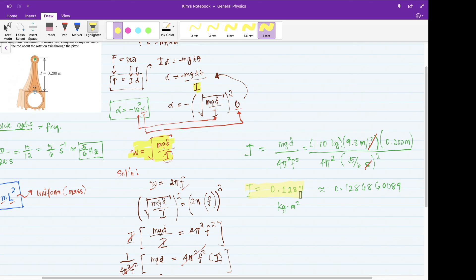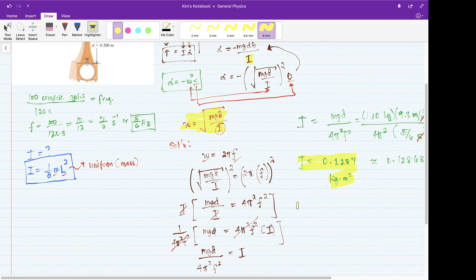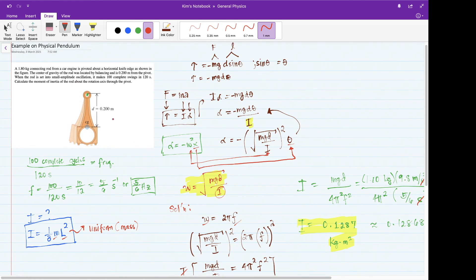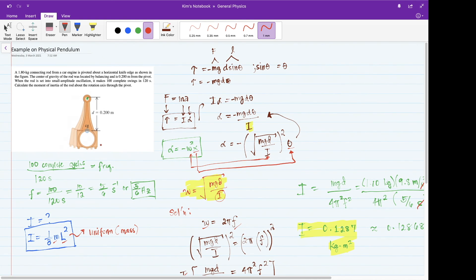You get this solution to the problem. Take note, do not be deceived by using this simplistic formula for the moment of inertia because this is under the assumption that the mass is uniform, which is not the case for simple pendulum in general. I'm hoping this was helpful. If you have any questions, you can drop your comments below or send me an email. Thank you.